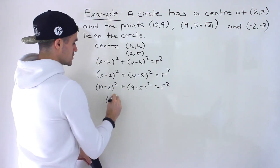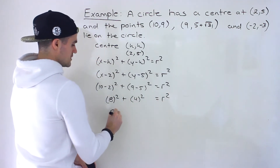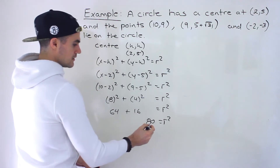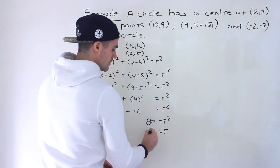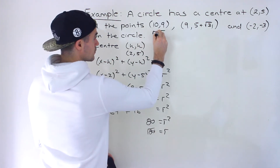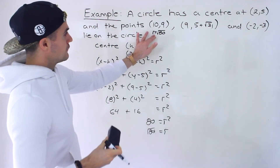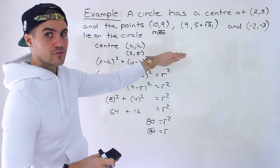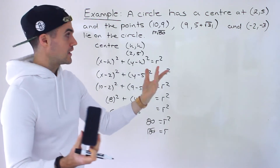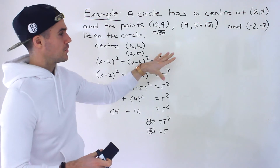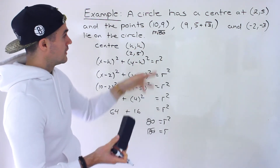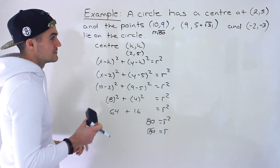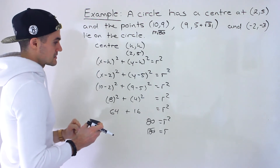Plugging (10, 9) into (x − 2)² + (y − 5)² = r² gives 8² + 4² = 64 + 16 = 80, so r² = 80 and r = √80. I'll leave it in exact form for now. You could also get a decimal — it's just under √81, so roughly 7.9-something. The radius for the first point is √80.